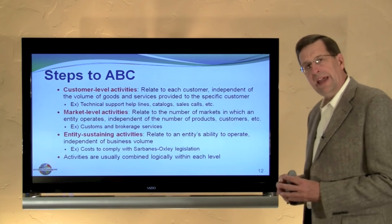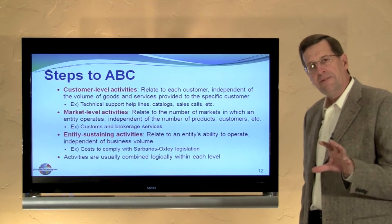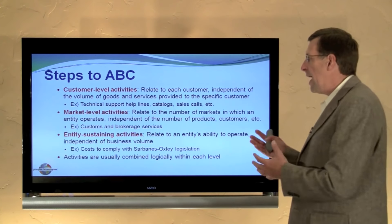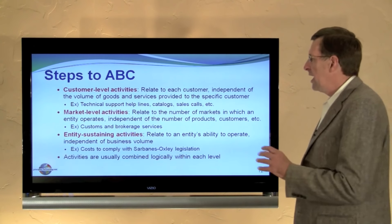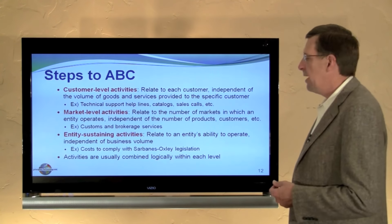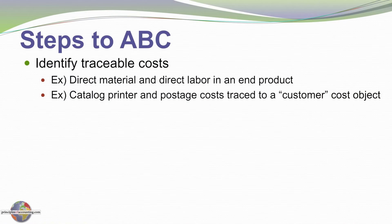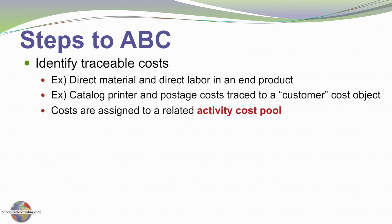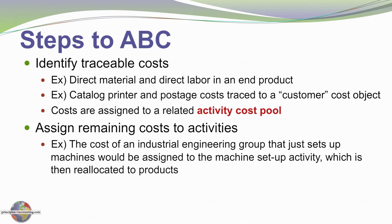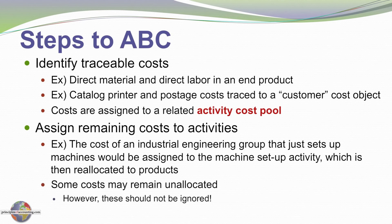By themselves, those terms may not have much context yet. I would suggest waiting until after you've viewed the next video and seen an example, then go back and review this again following along in the textbook, and each of these activity descriptions will make much more sense. The next step is to identify traceable costs — that is, costs that are directly traced and don't need to be allocated to a product, such as direct material and labor, or the printing and postage associated with a catalog. Those costs are assigned to a related activity cost pool. We would assign the remaining costs to activities — for example, the cost of an industrial engineering group that sets up machines would be assigned to the machine setup activity, which is then reallocated to the products. Some costs may not be allocated at all; they shouldn't be ignored, but they don't need to be allocated to a particular product or cost object.